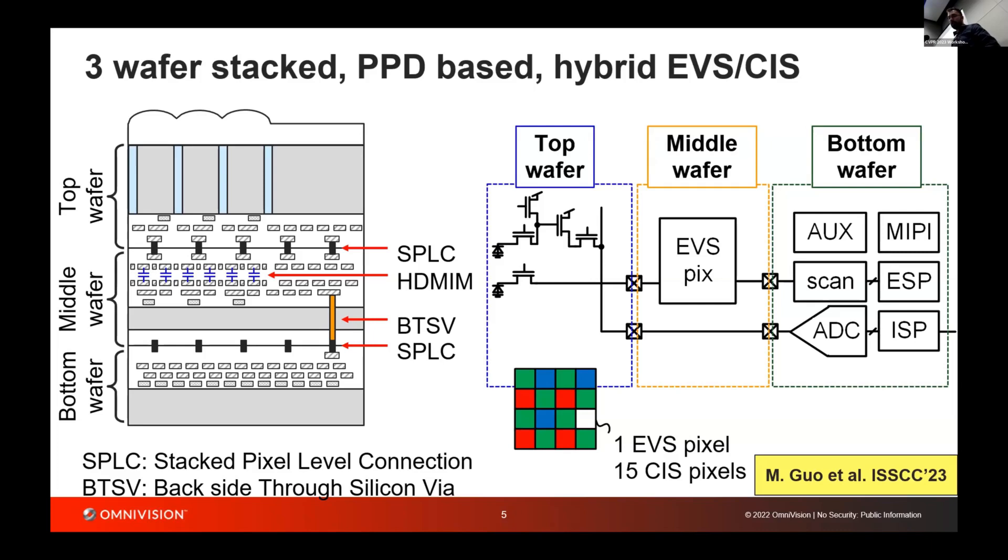The pixel wafer incorporates pinned photo diodes because we care a lot about image quality, and we use the same photo diodes also for the EVS pixel. We just operate it as a static bias. The EVS pixels connect on a cluster 4x4 pixels to the middle wafer. You can see on the bottom part there is a color filter array, RGB, for your normal CIS channel, and then one of these pixels has a clear color filter and connects to the middle wafer for EVS function. The EVS pixel is actually wrapped behind this 4x4 cluster of pixels.